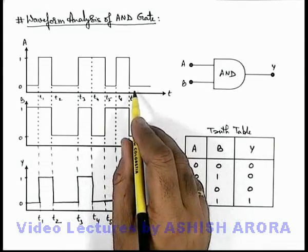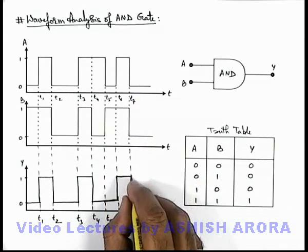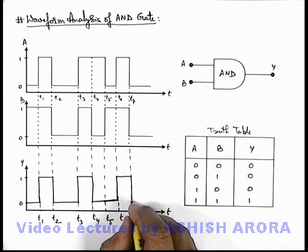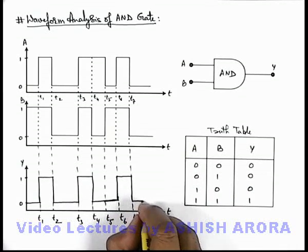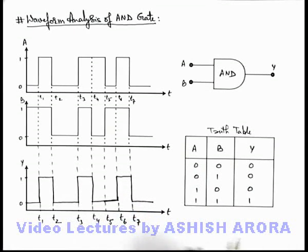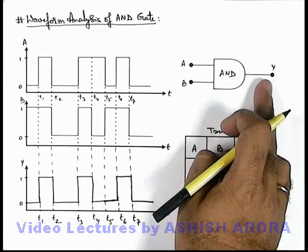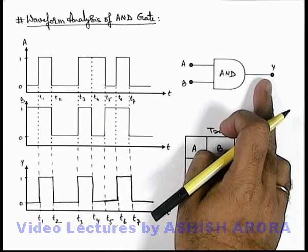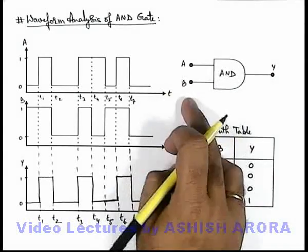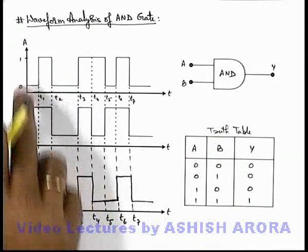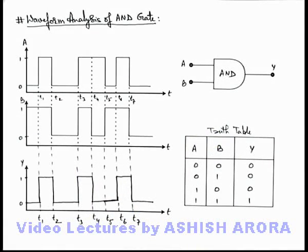Now onward, both the signals are in zero state, so for both being zero, this output will also be in zero state. So this will be the output waveform which will be produced at the output terminal of the AND gate if the A and B terminals are applied with these two digital signals. This is the way how we can produce the waveform available at the AND gate according to the truth table of this gate.